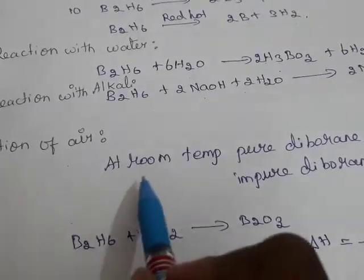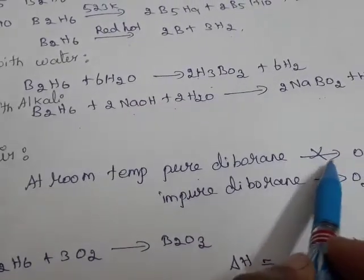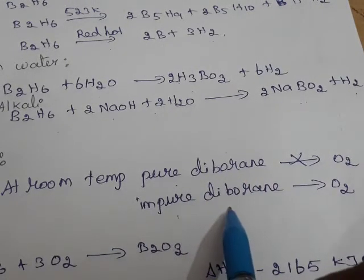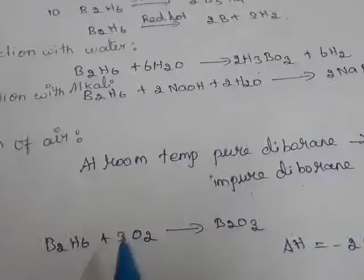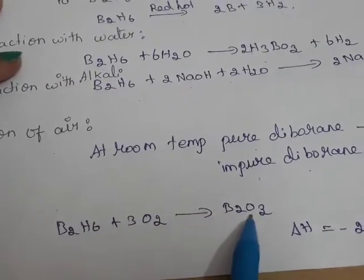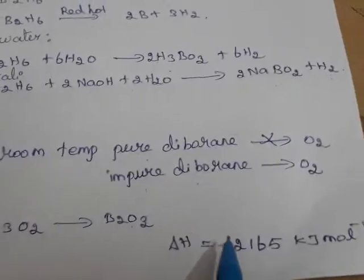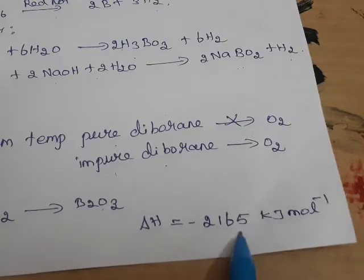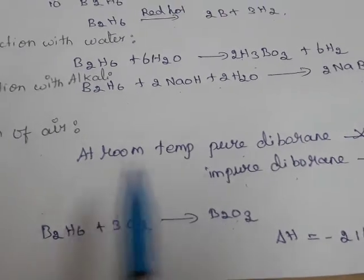In the reaction with air, at room temperature the pure Diborane does not react with oxygen, but impure Diborane reacts with oxygen to form B2O3, and a large amount of heat is liberated — 2,165 kilojoule per mole. So Diborane reacts with oxygen to form B2O3.